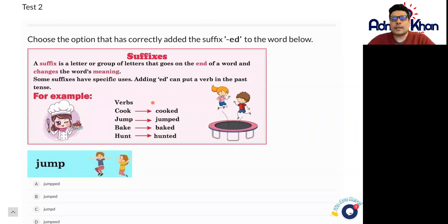In this case, all we're doing is we're adding "ed" at the end of all these verbs, and "ed" is what we call a suffix. So cook becomes cooked, jump becomes jumped, bake becomes baked, and hunt becomes hunted.